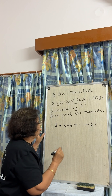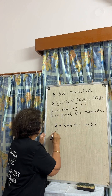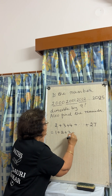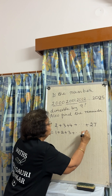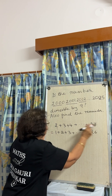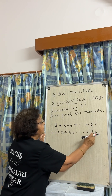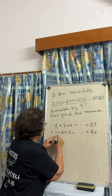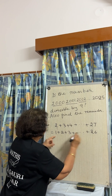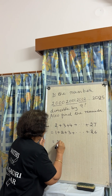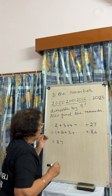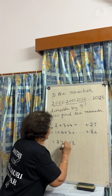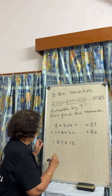Now, if you express it as 1 plus 2 plus 3 up to 26, I have written 27 as 1 plus 26. So 1 plus 26 is 27, and you will have 13 such pairs.